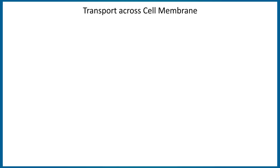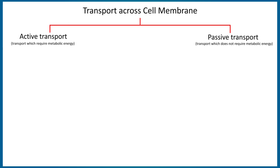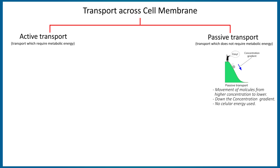In this video we are going to talk about transport across the cell membrane, that is active transport and passive transport. The passive transport is the movement of the molecules from higher to lower concentration, down the concentration gradient, and without any use of the cellular energy.